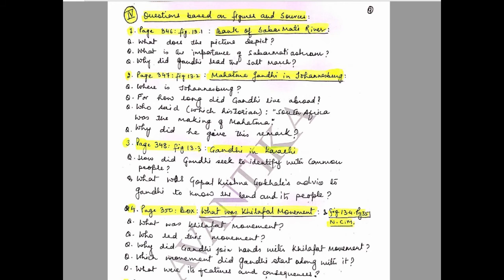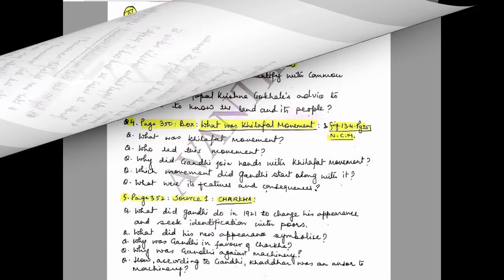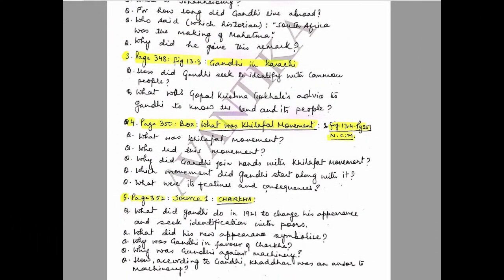Question 3: Page 348, Figure 13.3 — Gandhi in Karachi. Questions: How did Gandhi seek to identify with common people? What was Gopal Krishna Gokhale's advice to Gandhi to know the land and its people?